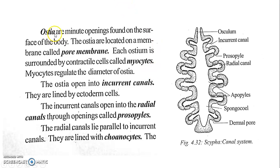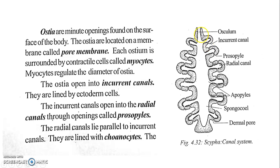The first component is the Dermal Ostea. Dermal means it is present on the ectoderm — the outer side. These are minute openings found on the external surface of the body. The Ostea are located on a membrane called the pore membrane. Each Osteum (singular) is surrounded by contractile cells called myocytes. Myocytes regulate the diameter of the Ostea.